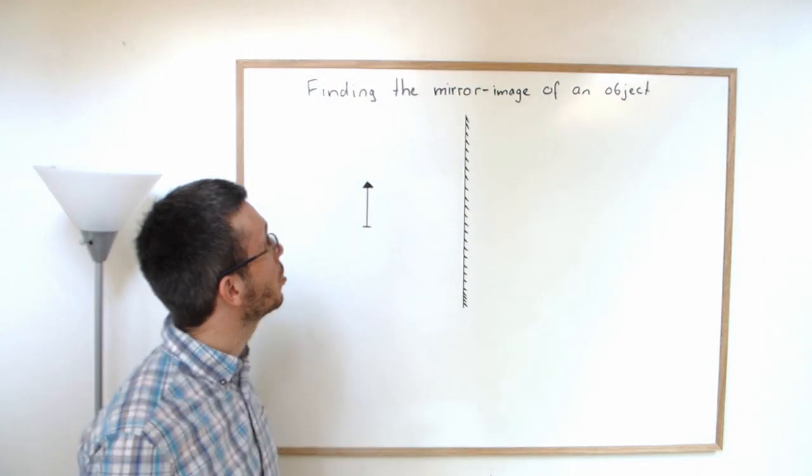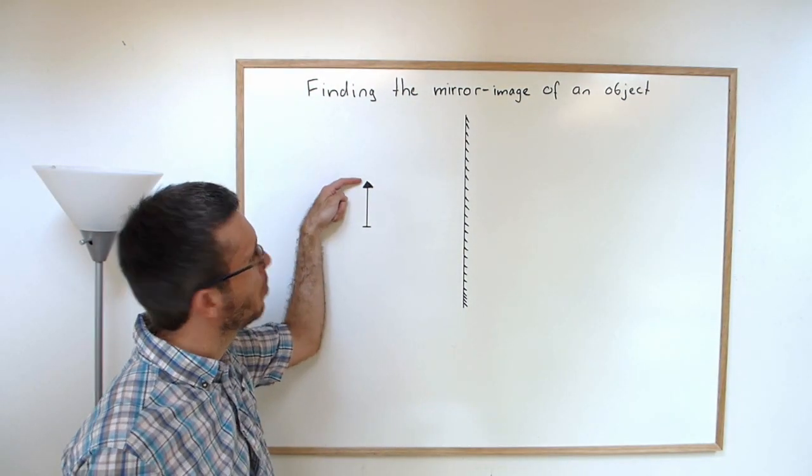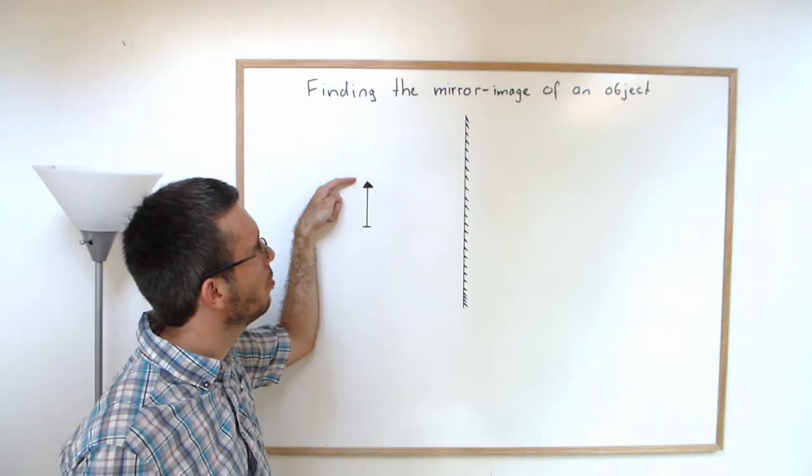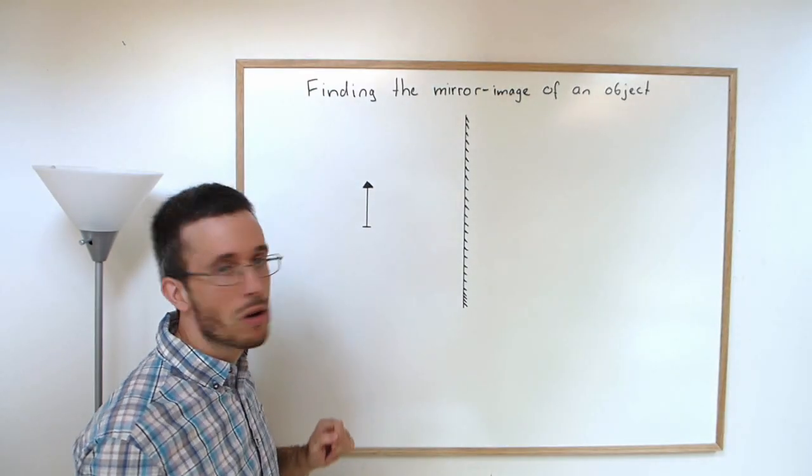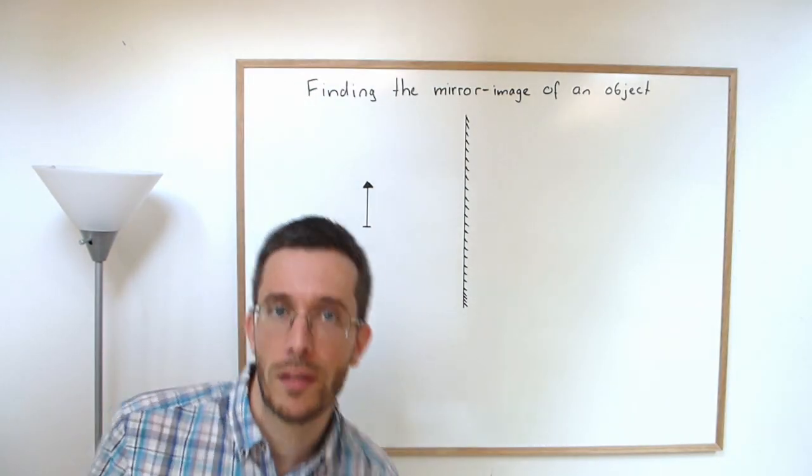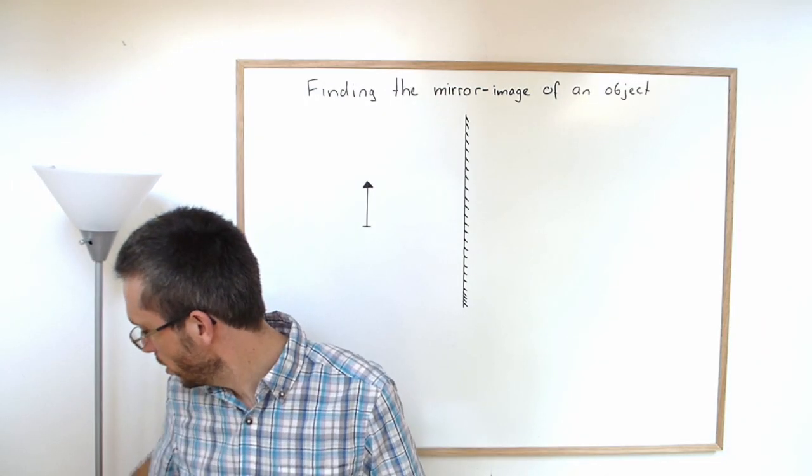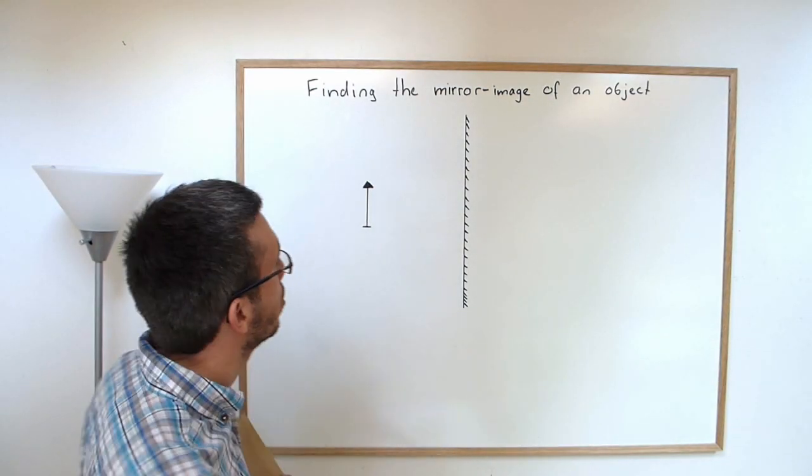To find the mirror image of an object, for example the tip of this arrow, we need to draw at least two rays. So we can draw two random rays that go to the mirror.